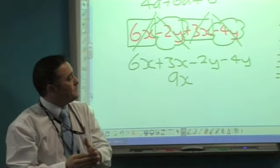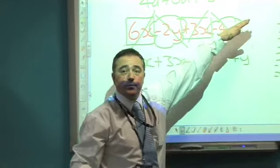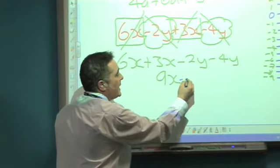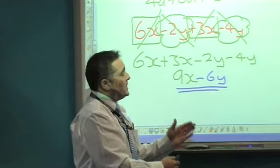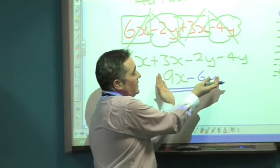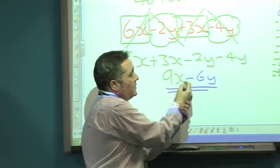And a lot of people would have perhaps gone the other way. So the answer is minus 6y. That's the final answer. Make sure that you're clear that it is a definite negative there.